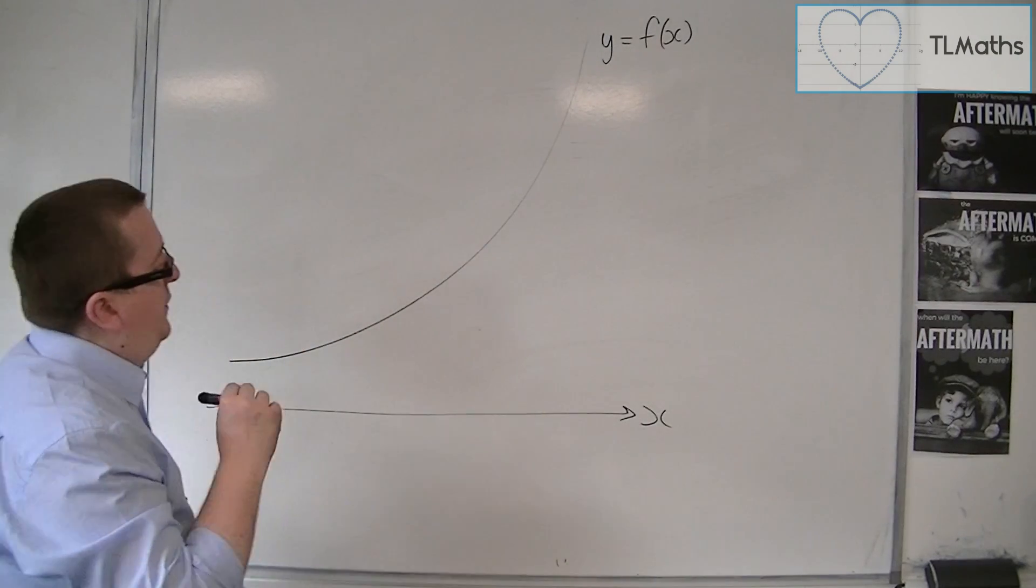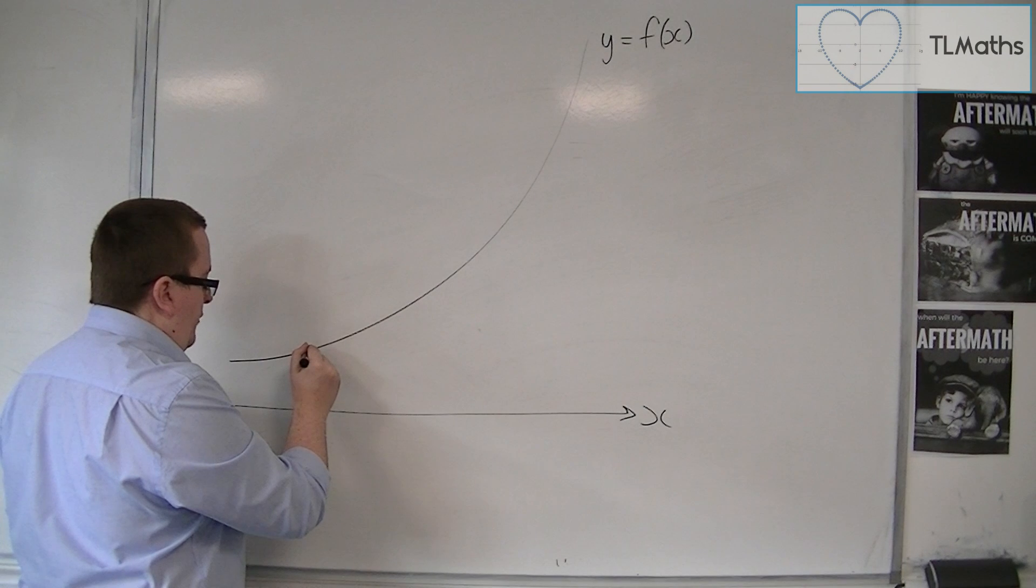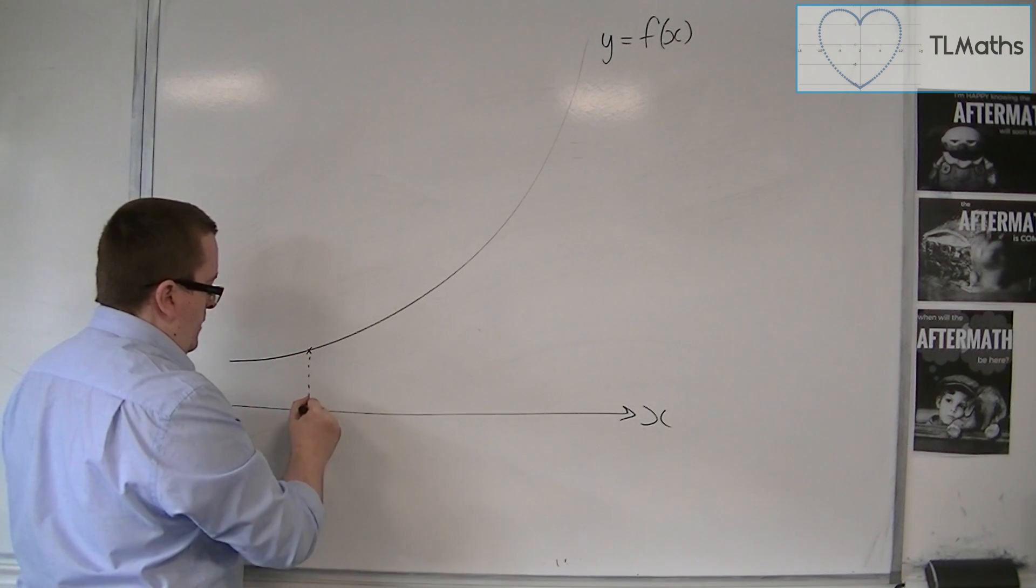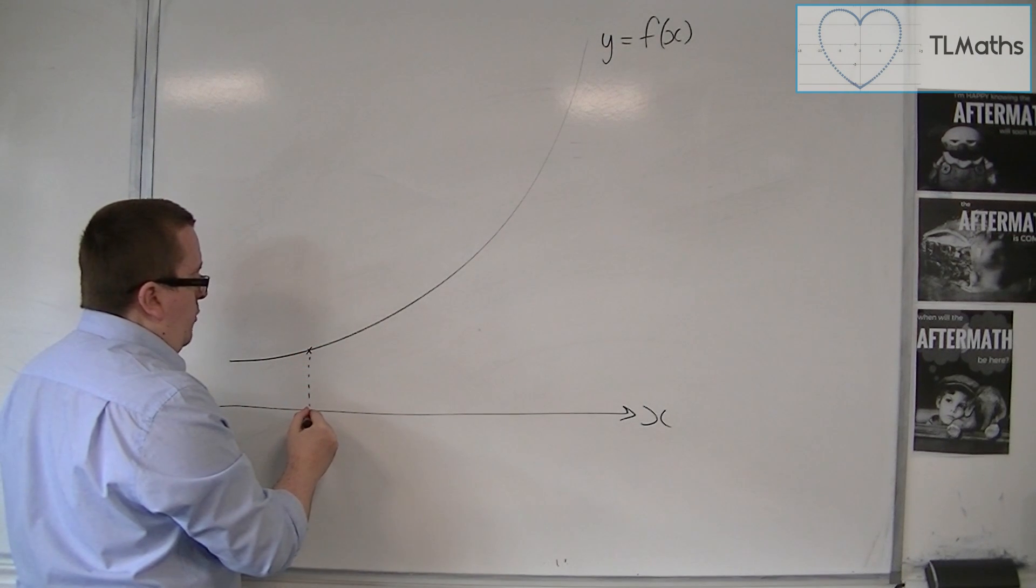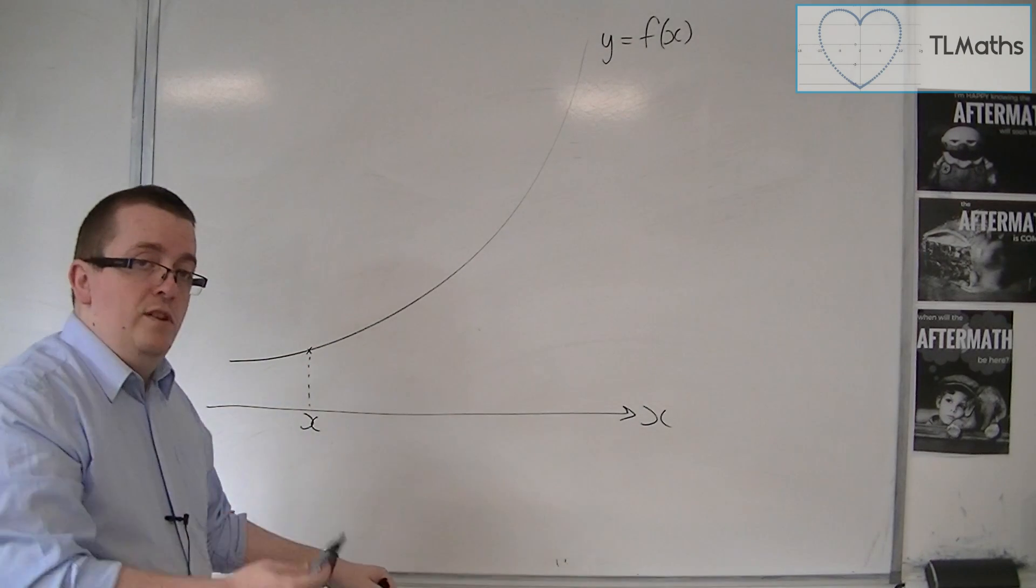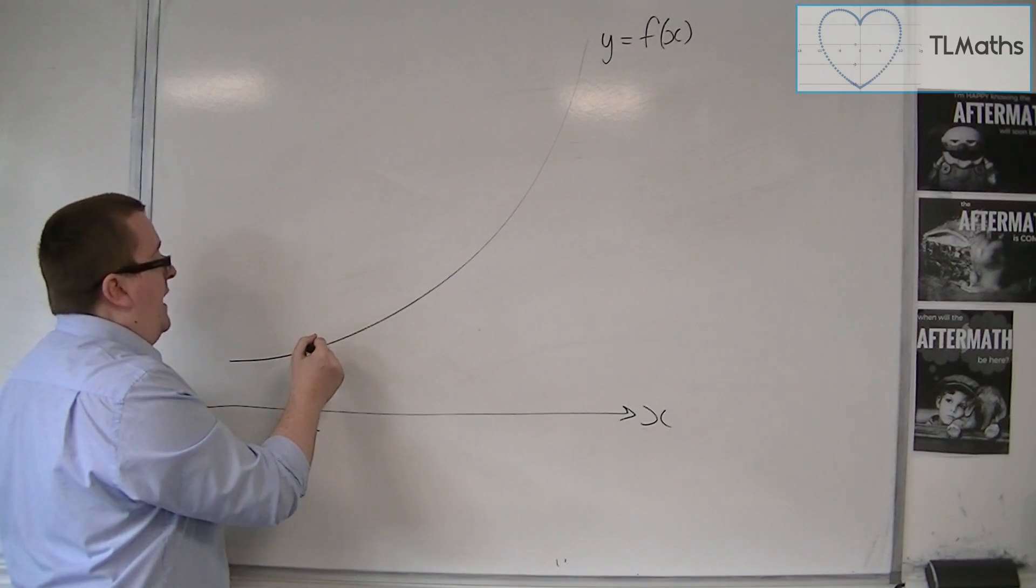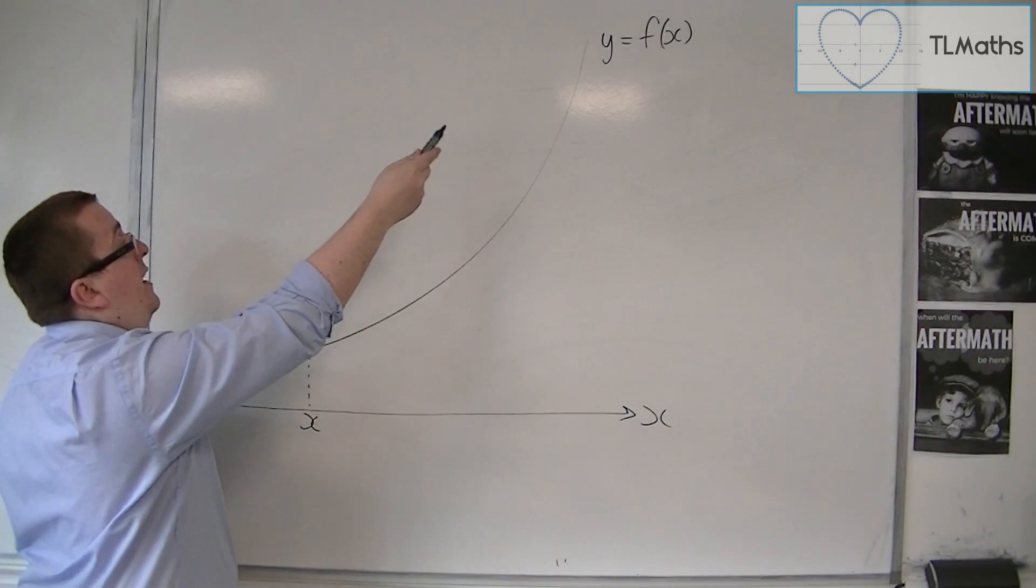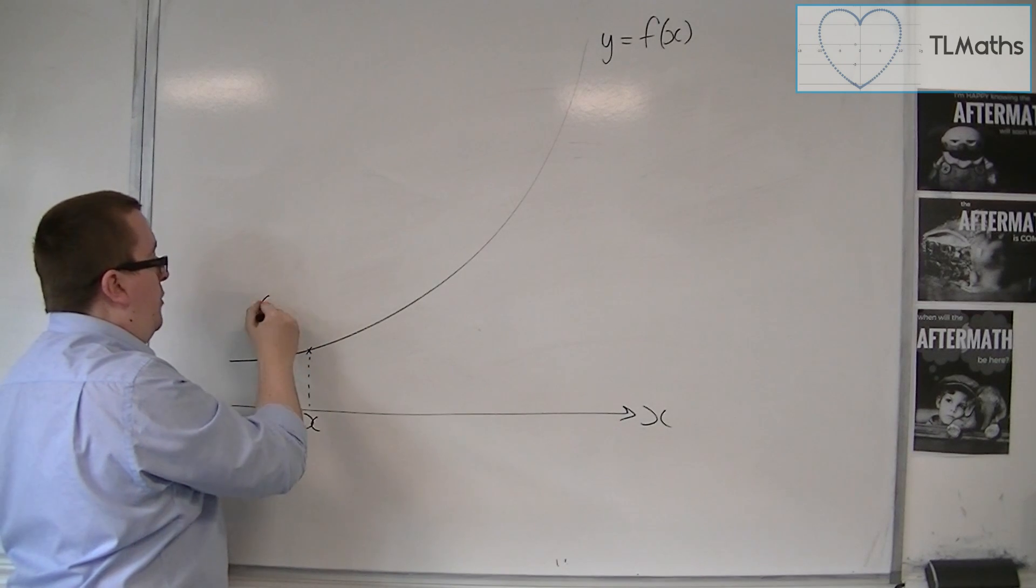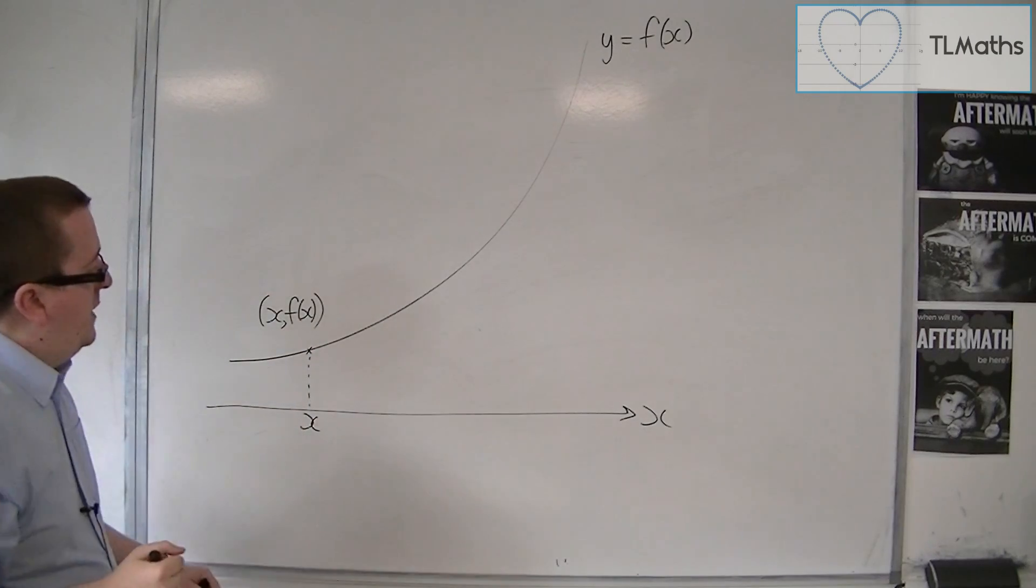So at a particular point, let's choose a point here, for example. This point will have coordinates so that it has this x-coordinate, let's call it x, and it will have a y-coordinate given by f of x. And so this point will have the coordinates x, f of x.